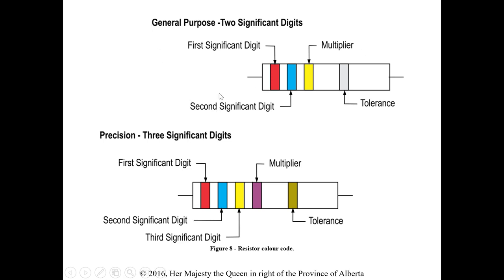Color coding is used when resistors are very small and don't have enough room to write information on. General purpose resistors have two significant digits — the first, second, a multiplier color, and then a tolerance band. The difference between general purpose and precision is just the addition of a third significant digit; otherwise they are the same.